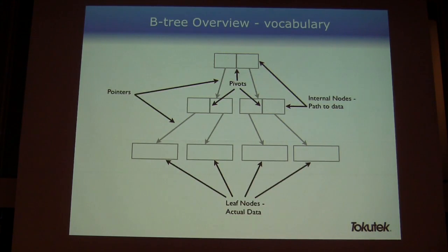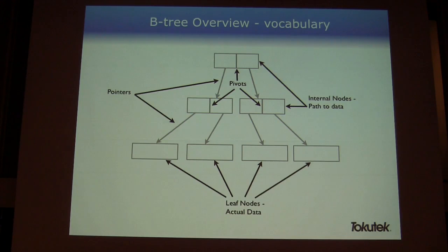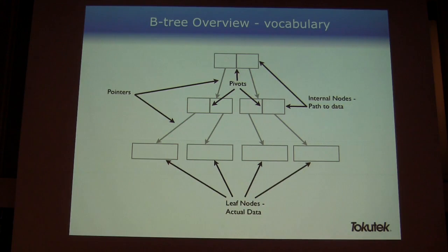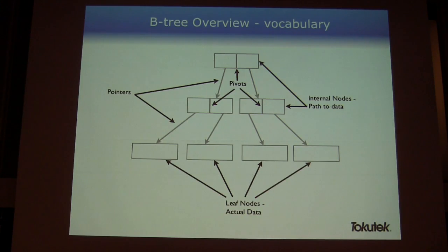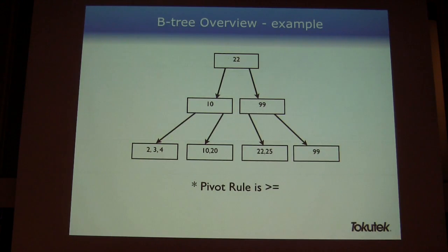From a vocabulary perspective, B-trees are good at helping you store and find things rapidly. Each rectangular area we'll refer to as a node. Anything above the bottom we call internal nodes; the very bottom is a leaf node. Internal nodes in a B-tree are really about searching — they're a path. The internal nodes help you get there, and the leaf nodes store the actual data. Those lines in the middle of nodes are called pivots, which help you understand whether to go right or left. Pointers take you down the tree to the bottom.